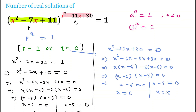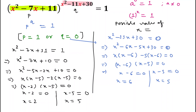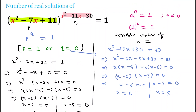So the possible solutions are x = 2, x = 5, and x = 6. These three values are the real solutions for this equation. Let's verify these as well.